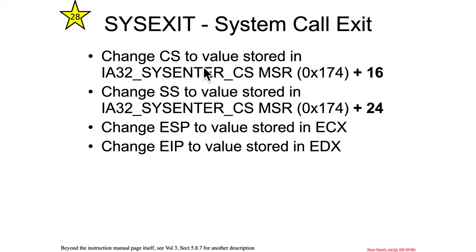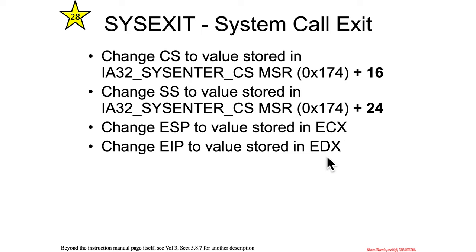Sysexit should be the opposite, changing CS back to what it was before. What it does is set CS to the MSR value plus 16, incrementing up the GDT table to pick the entry from there. Likewise, SS gets the MSR plus 24. ESP is set to the value stored in ECX, and EIP is set to the value stored in EDX.